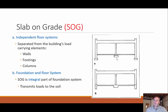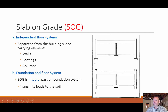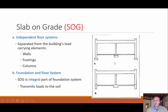Slabs on grade ties into what I was just showing with the cutout. That little cutout means it was an independent floor system. If we look at the loads coming down in this building, they transfer down the column to the footer, and the load goes into the soil. This is an independent floor system, meaning the floor is not supporting the building loads — the building loads go directly down to the soil. The floor is essentially self-supporting.